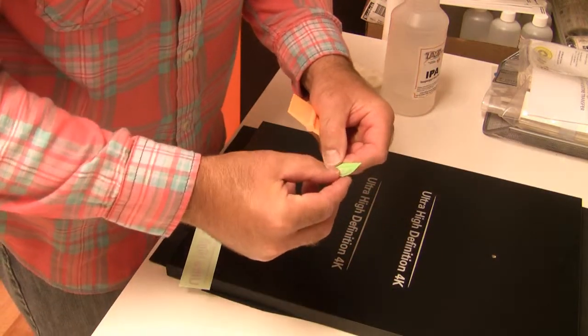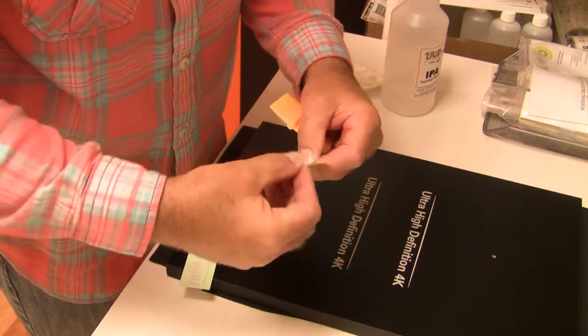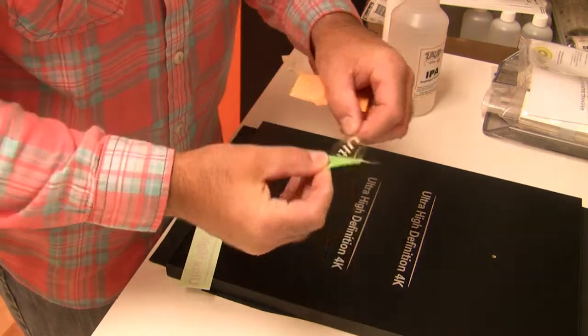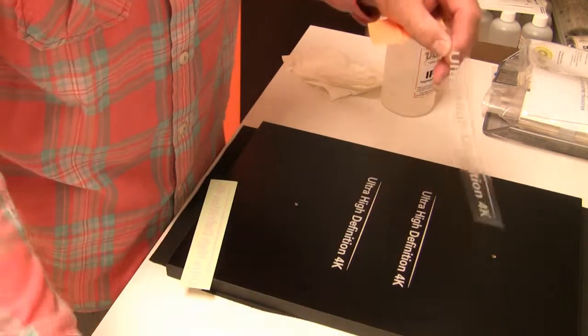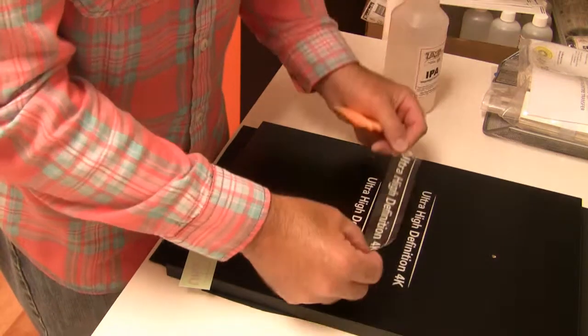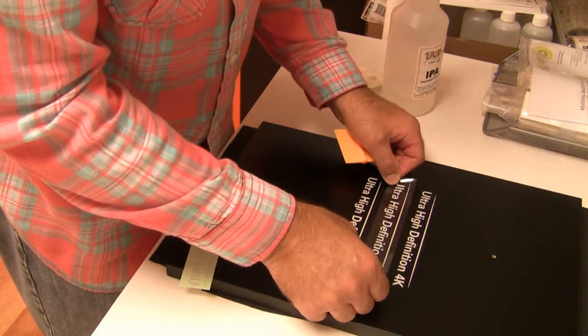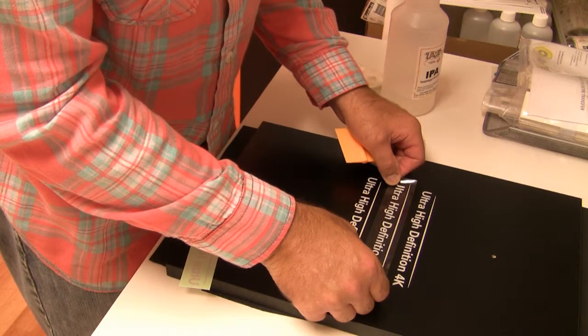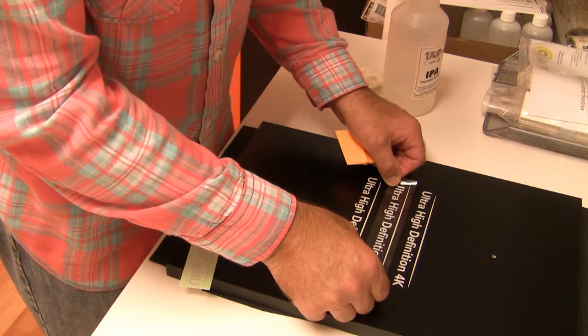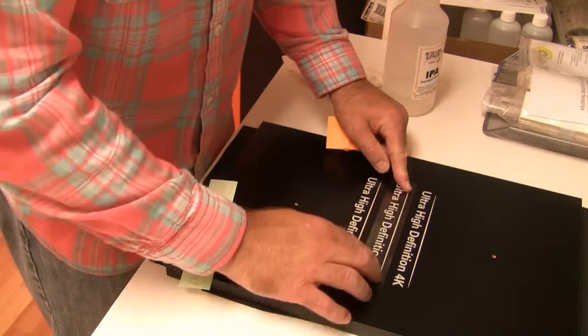Again, we remove that milky white release liner. We dog ear a corner to separate the clear from the green carrier stock. Place it into position. Now when you place it down, you want to make sure you have it lined up right where you need it because chances are once it hits the surface it's not going to lift off.